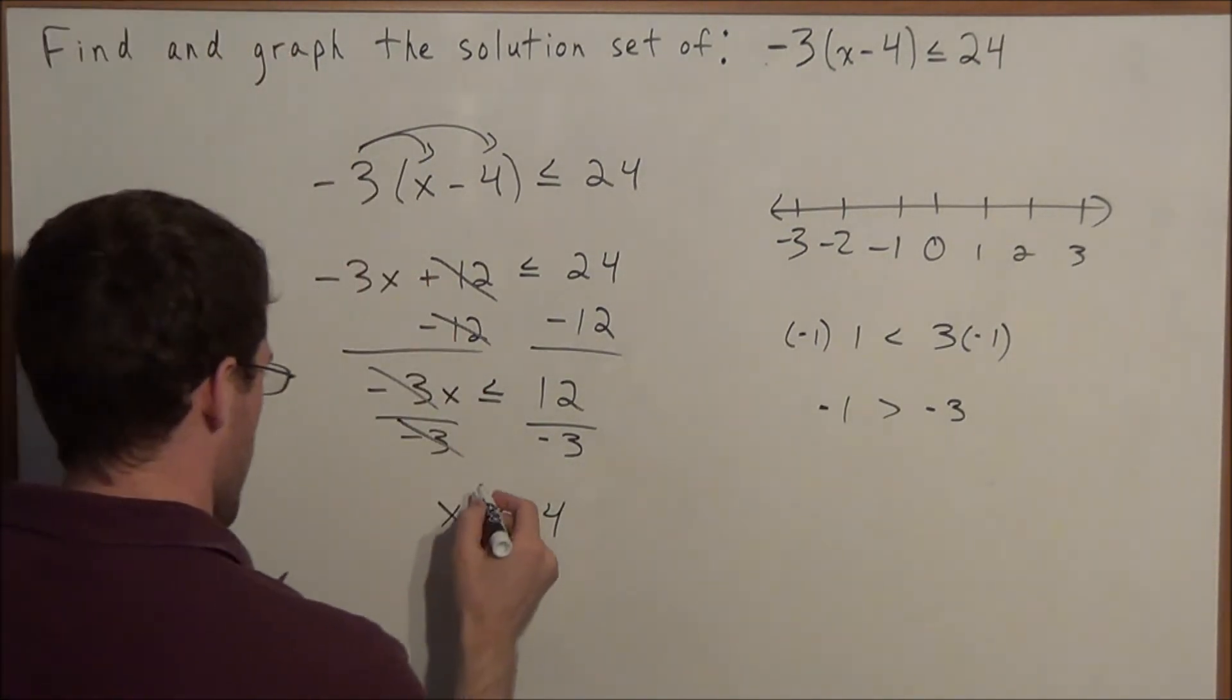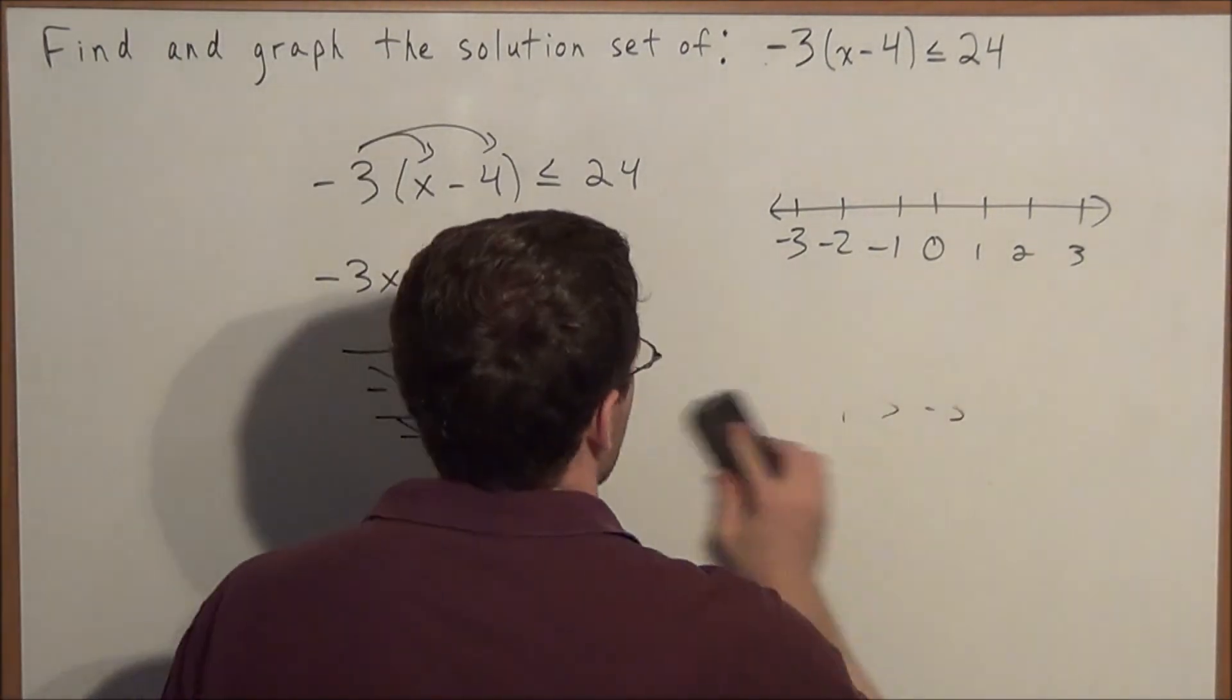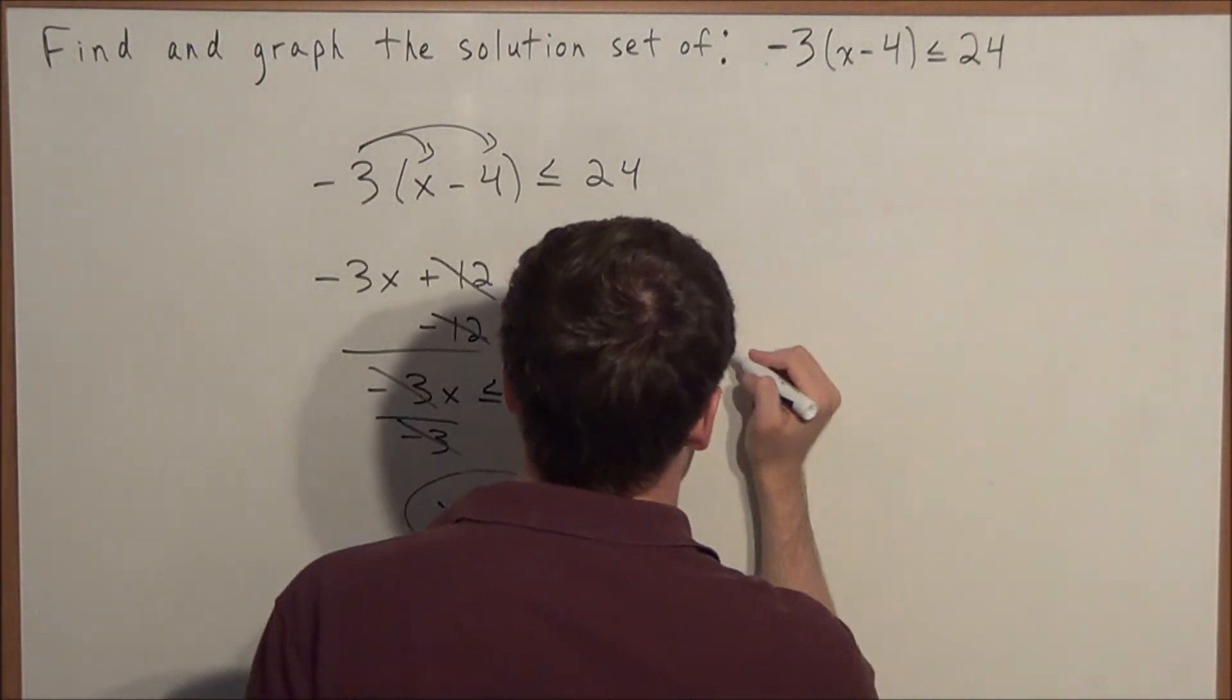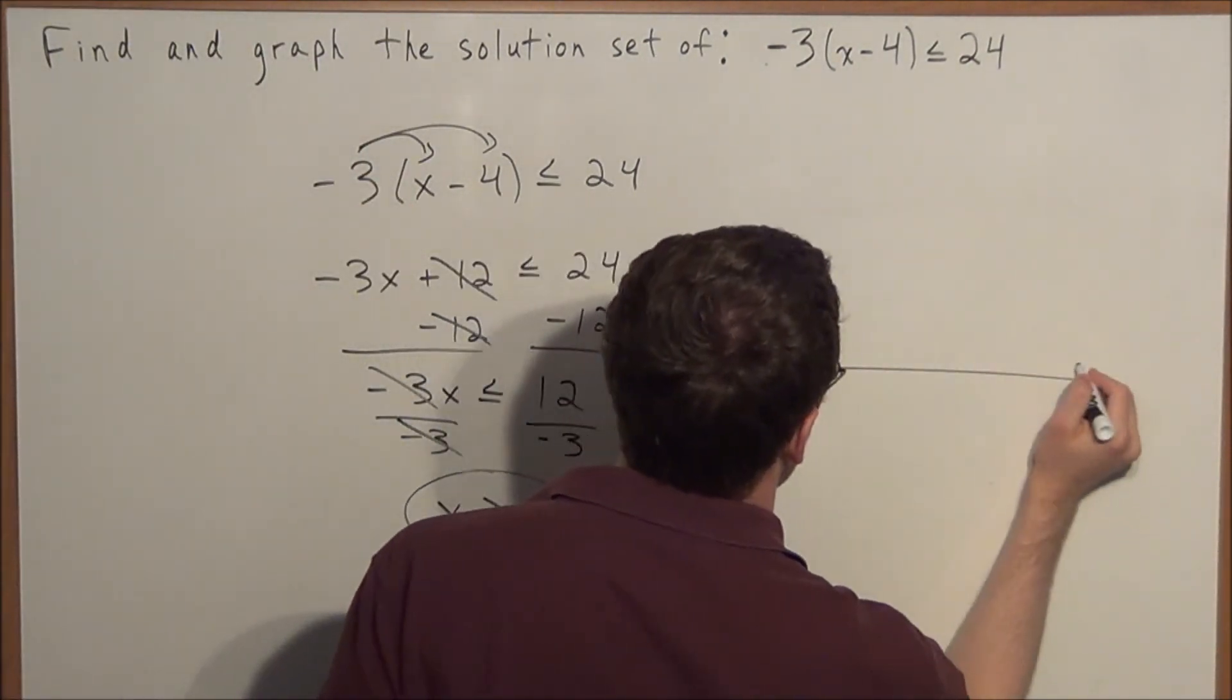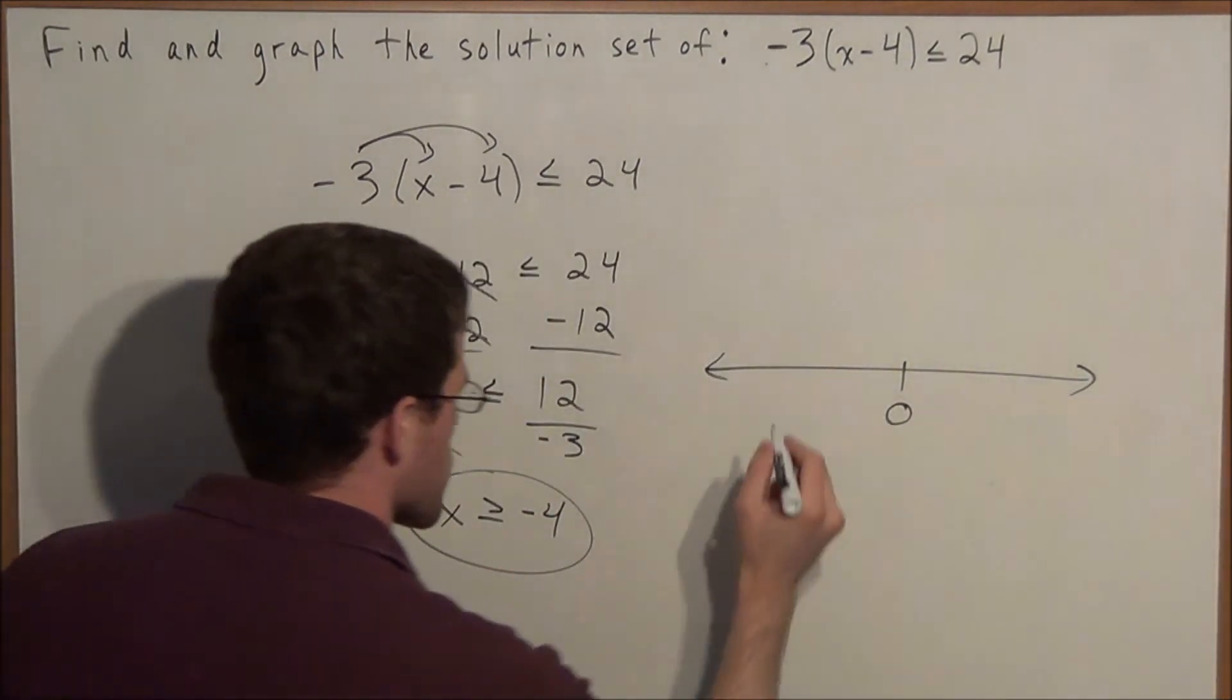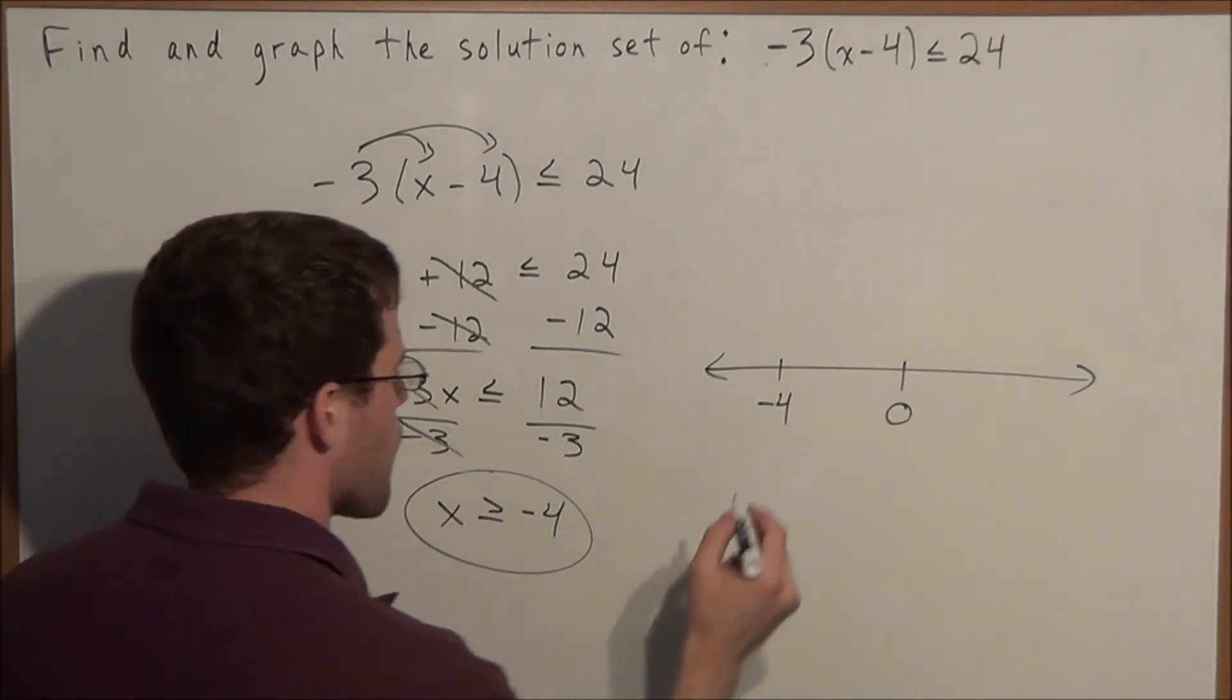So now we have our solution x ≥ -4, and we can graph this now. We start by constructing a number line. The only point that we really care about is -4. This is our critical point.